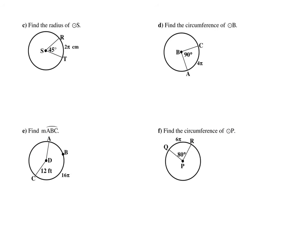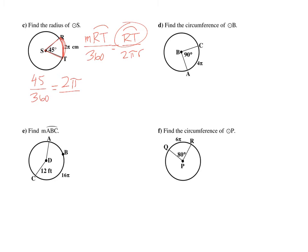Find the radius of circle S. Setting up the formula: measurement of arc RT over 360 equals arc length RT over 2πr. Arc measure = 45° and arc length = 2π, giving 45/360 = 2π / 2πr. This simplifies to 1/8 = 1/r. Cross-multiplying gives r = 8 centimeters.